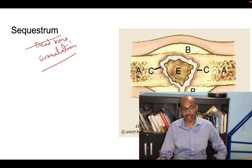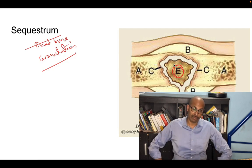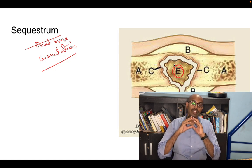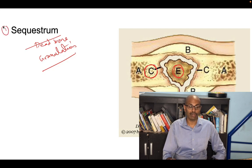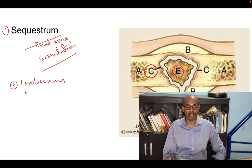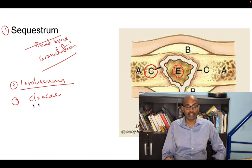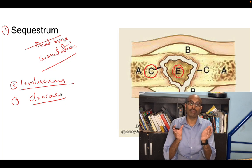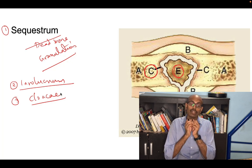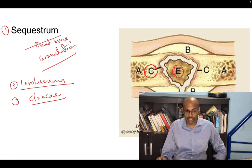In this picture, the thing marked as E is the sequestrum. Now, surrounding the granulation tissue, the body tries to form new bone — this new bone formation surrounding the sequestrum is called the involucrum, marked as C in the image. The third term is cloaca: the body makes sinuses or pathways for infected tissue to discharge as pus, and these openings in the new bone (involucrum) are called cloaca, marked as D.